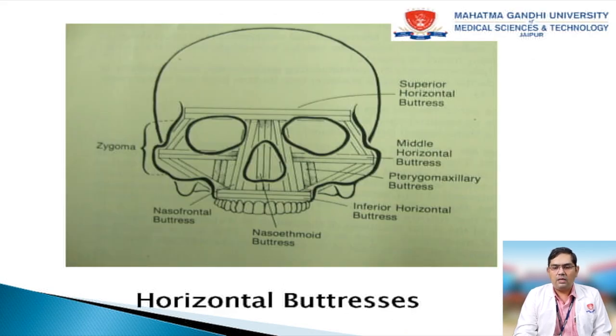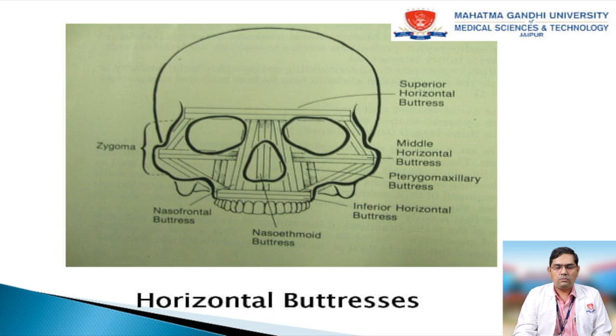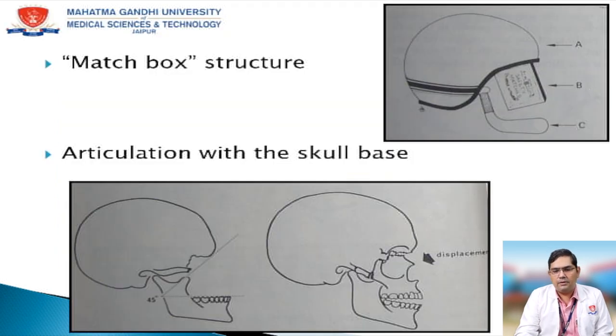Horizontal buttresses are again three: the superior one is the supraorbital rim, the middle one is the zygomatic, and the inferior is the occlusal and palatal bone buttresses.